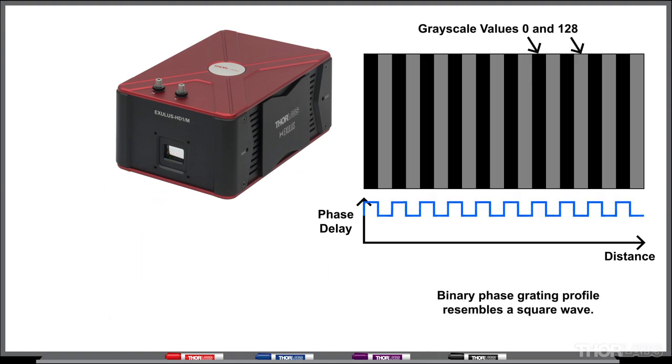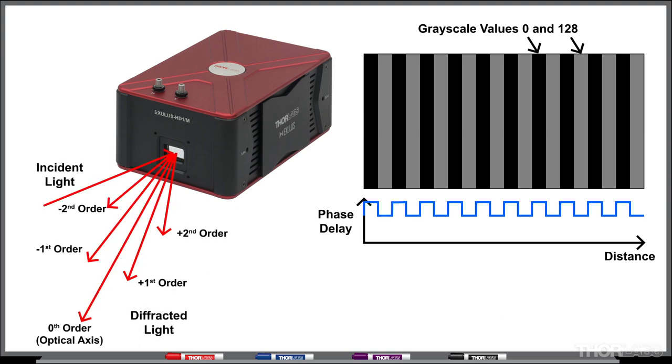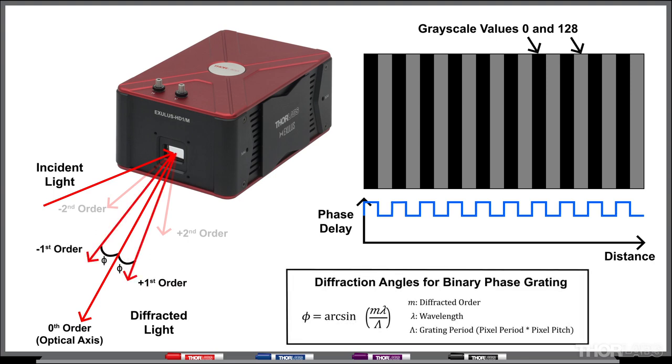Uploading a pattern of two alternating shades of gray and equal width bands creates a binary phase grading. The phase grading diffracts the incident light into multiple orders. Light in the 0th order behaves like a beam reflected from the SLM and travels along the optical axis, while the diffracted orders travel at specific angles to the optical axis.